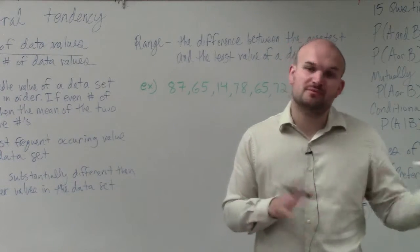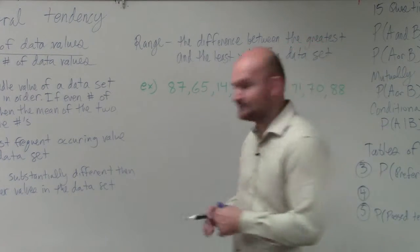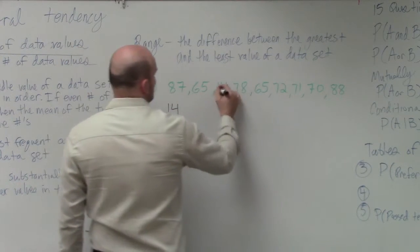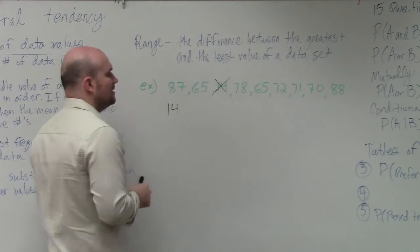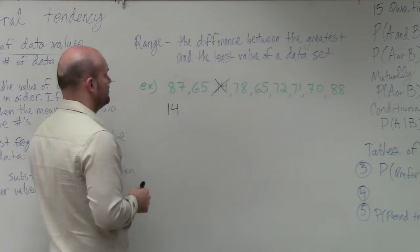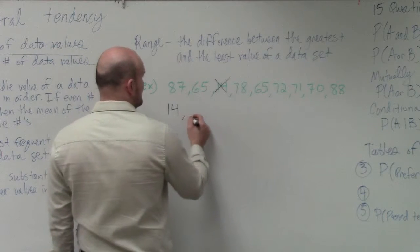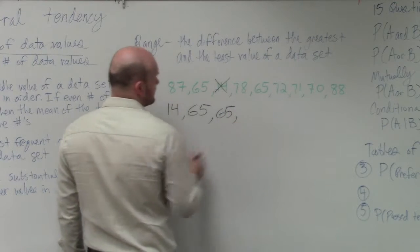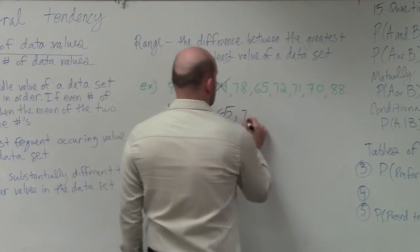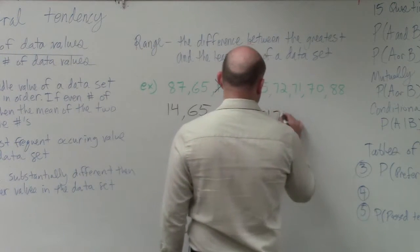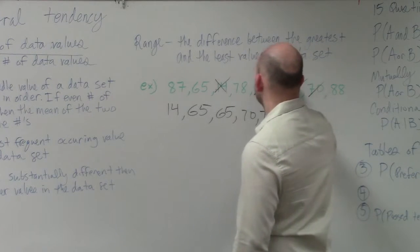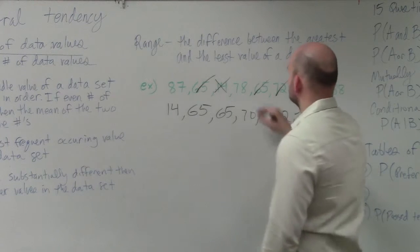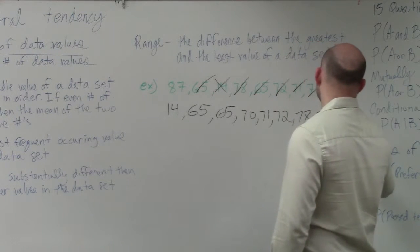I typically like to order from least to greatest, but it doesn't really matter. So I'm going to find the lowest value, which is going to be 14, and I'll just cross it off. Then the next lowest one is going to be 65. I have 65 again. Then I have 70, 71, 72, 78, 87, and 88.